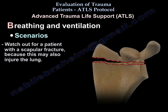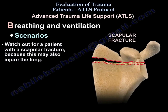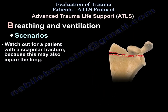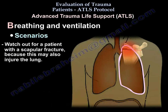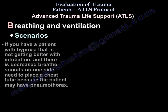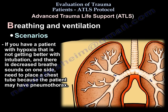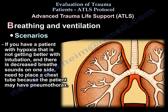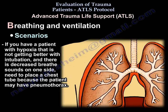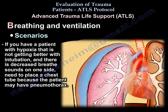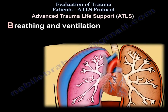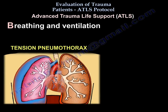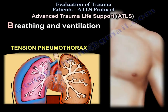Watch out for a patient with a scapular fracture because that can also injure the lung. If you have a hypoxic patient not improving with intubation and decreased breath sounds on one side, place a chest tube — the patient has a pneumothorax. These are two examples of tension pneumothorax and flail chest.